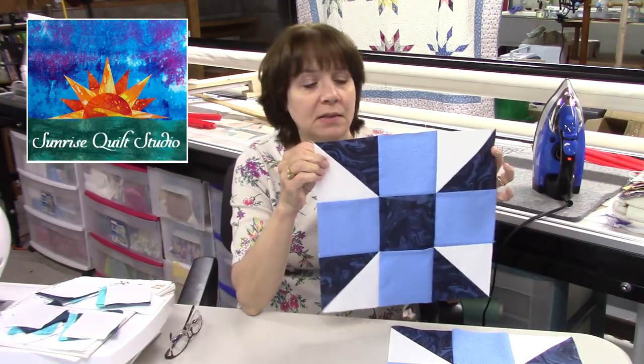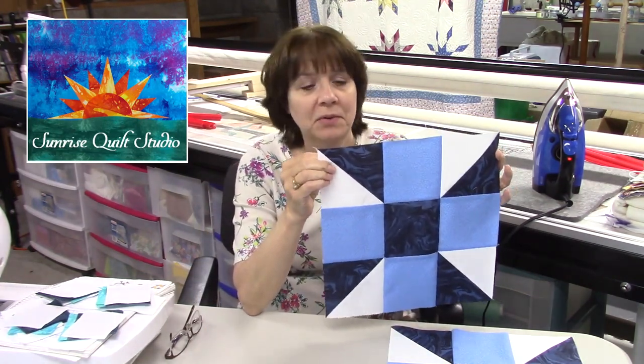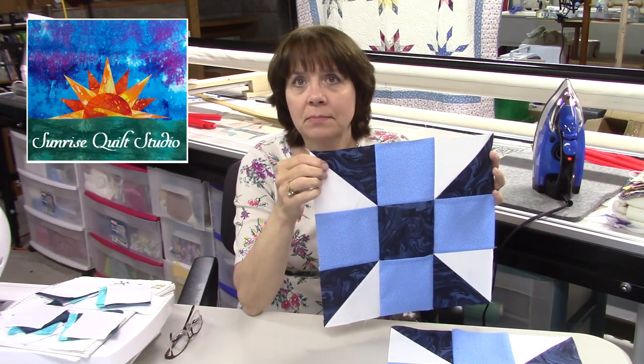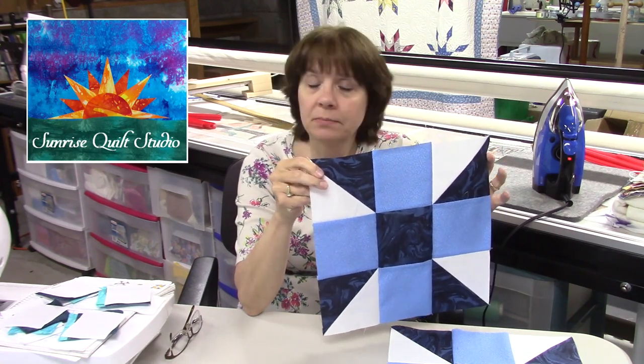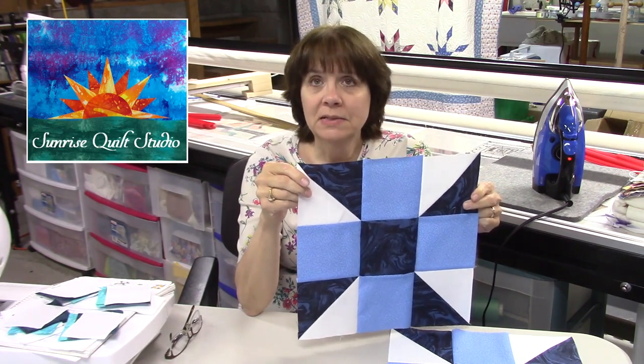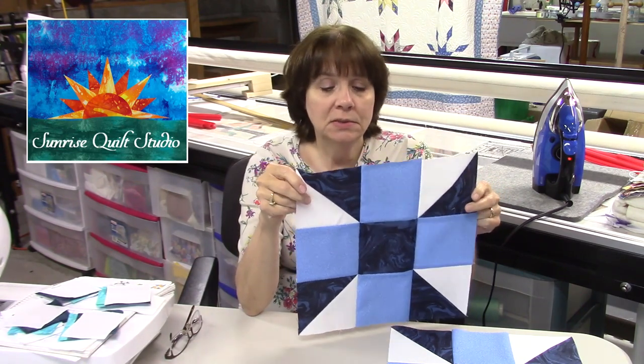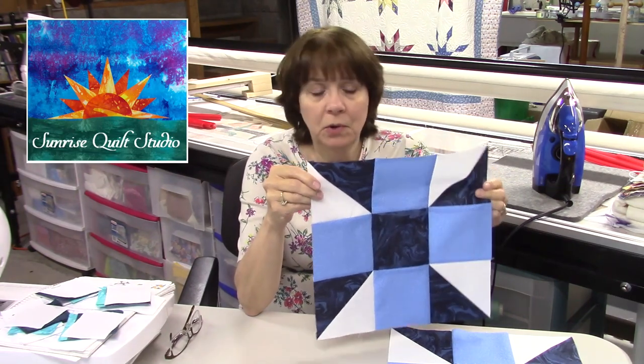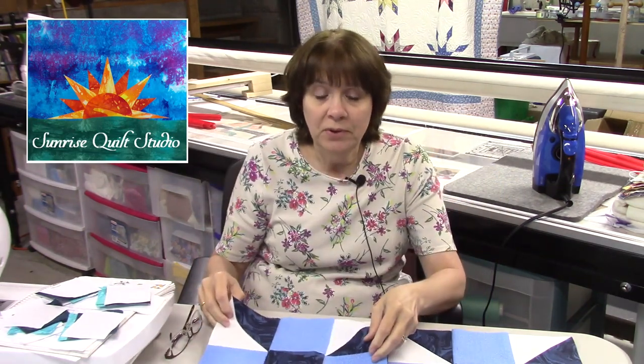Well, I hope you enjoyed this video on the Calico Puzzle block and I hope you give this one a try. This one goes really fast. The only thing you need to do is make these half square triangles and then put them all together. So it goes really fast, it's really easy to do, and you can adjust the size of these blocks to whatever you want. So I hope you give it a try. In the meantime, I hope you are all staying safe and staying healthy and I'll see you in the next video.